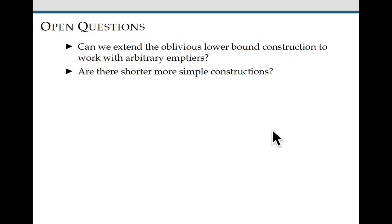First, can we extend the oblivious lower bound construction to work against arbitrary emptiers instead of just greedy like emptiers? This would be pretty neat. And second, are there shorter and more simple constructions for the lower bounds?